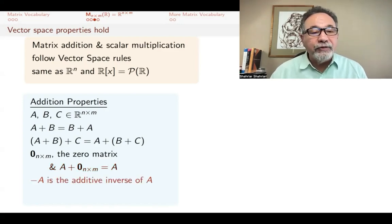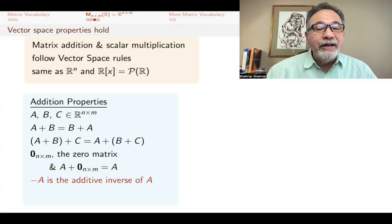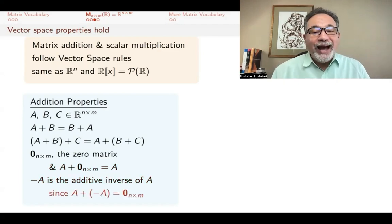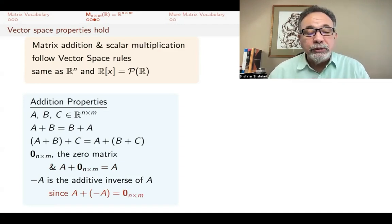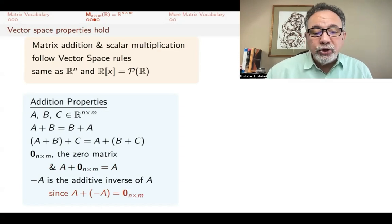Likewise, we have an additive inverse for every matrix. For every matrix, we have a friend or maybe an enemy that when you add them together, we get that zero matrix, and in this case, it's -A. If you take a matrix and just multiply all the entries by minus one, then you get a matrix that if you add them, you get the zero matrix.